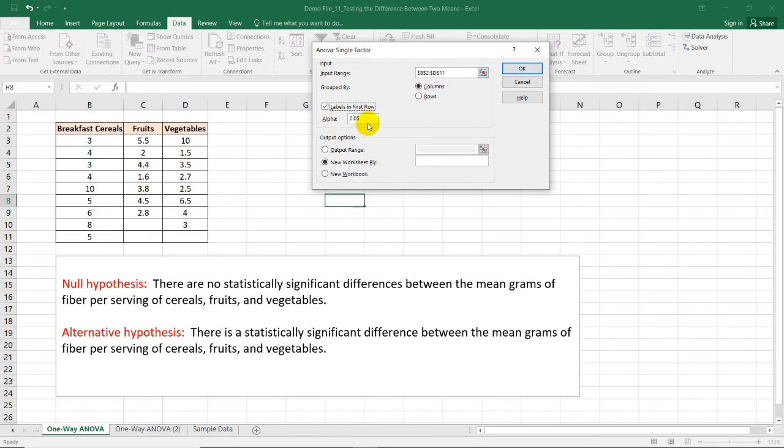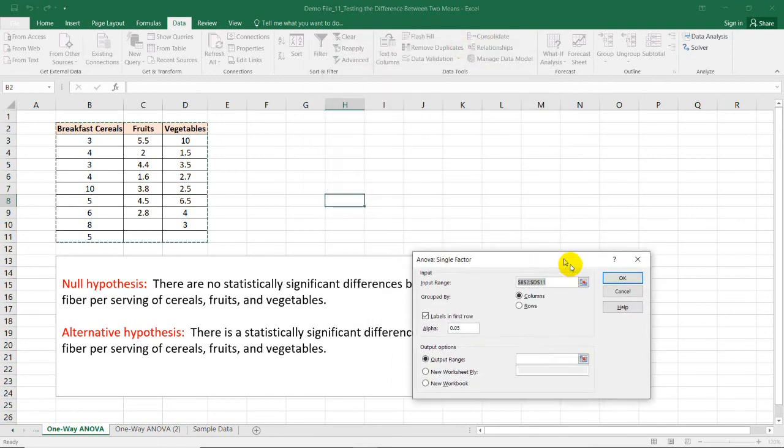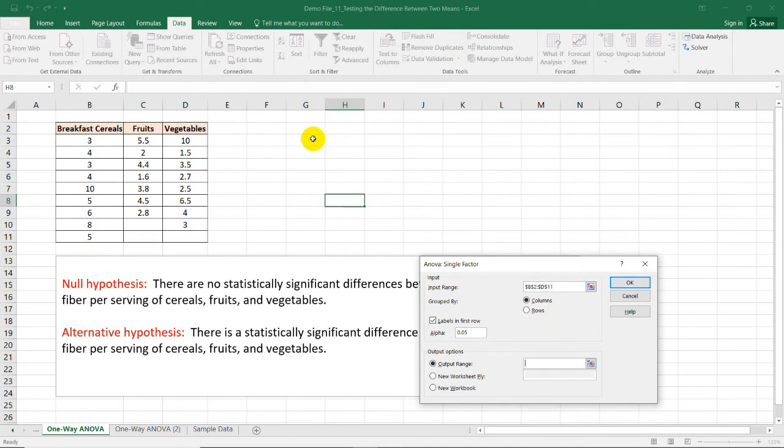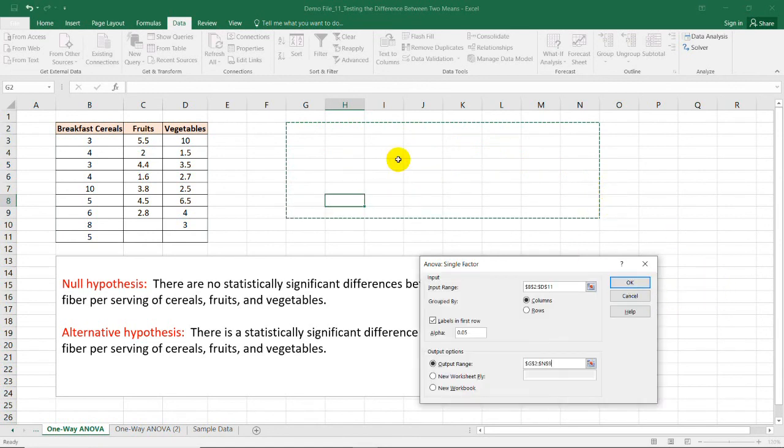Now, for the alpha, we have 0.05. And in this case, I'm going to select my output range in this sheet, so I need to select a particular area where the summary table will be pasted. Let's select this range. Then select OK.